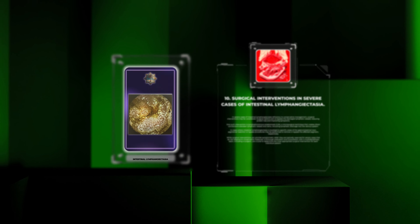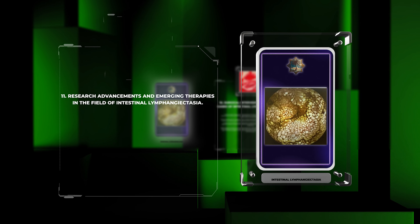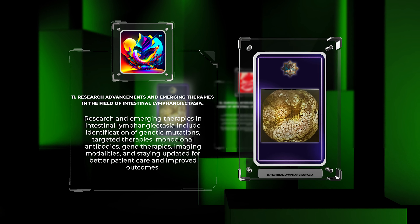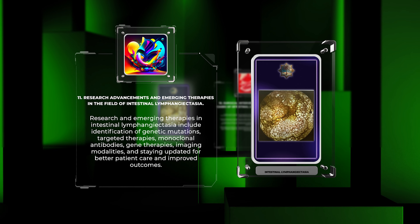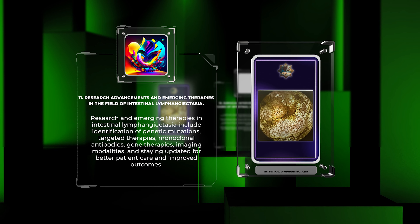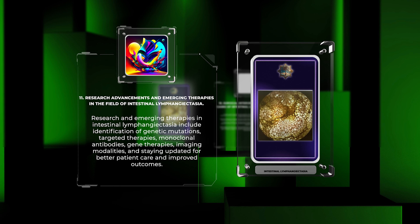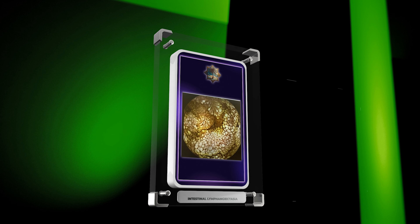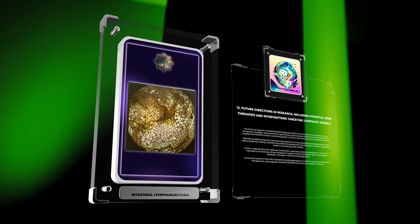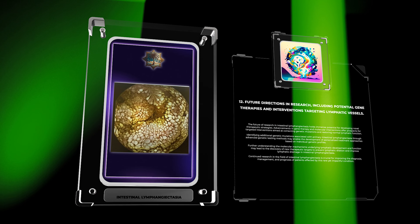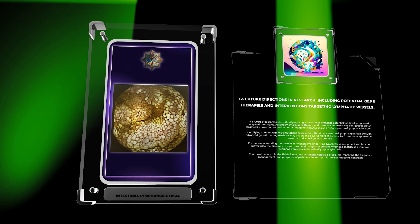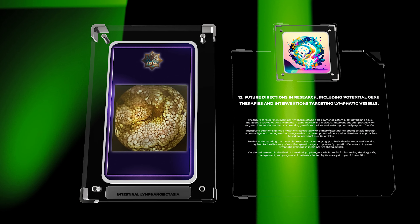Research and emerging therapies in intestinal lymphangiectasia include identification of genetic mutations, targeted therapies, monoclonal antibodies, gene therapies, and advanced imaging modalities. The future of research holds immense potential for developing novel therapeutic strategies. Advancements in gene therapy and molecular interventions offer prospects for targeted interventions aimed at correcting genetic mutations and restoring normal lymphatic function.